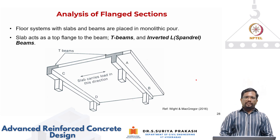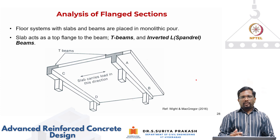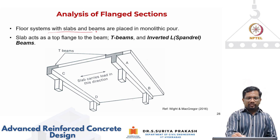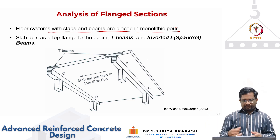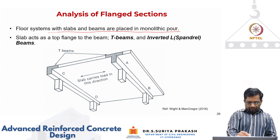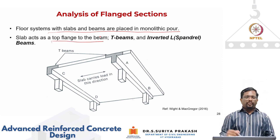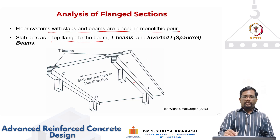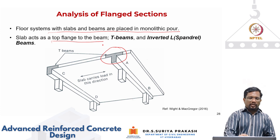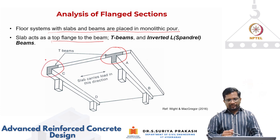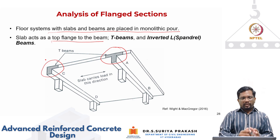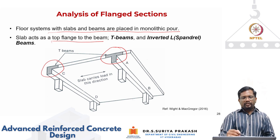Usually in reinforced concrete construction, when you go for a monolithic construction — cast-in-place construction — everything is cast together. You set a formwork and then cast everything together. Floor systems, slabs, and beams are always placed monolithically, meaning concrete is poured together. A part of the slab acts as a top flange to the beam. Depending upon the location of the beam — whether it is on the edge of the building or as an interior beam — it can either act as a T-beam or as an inverted L-beam (spandrel beam).